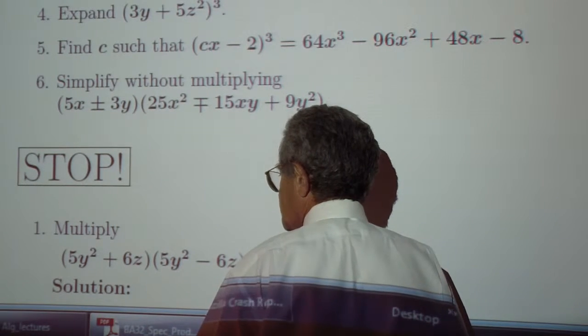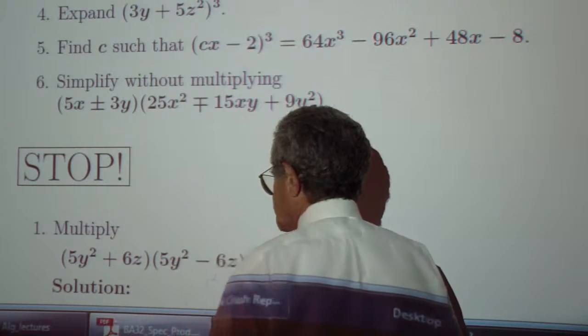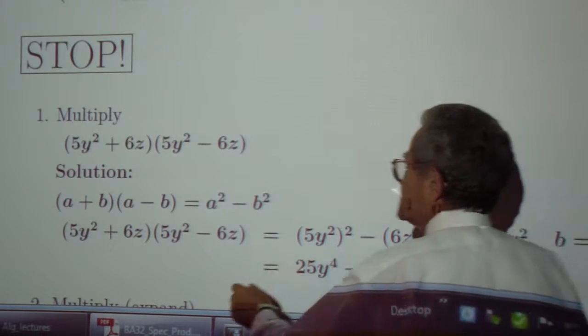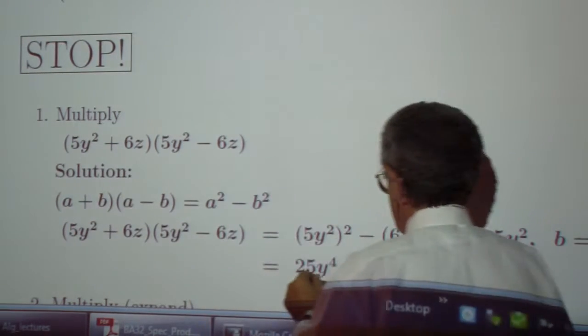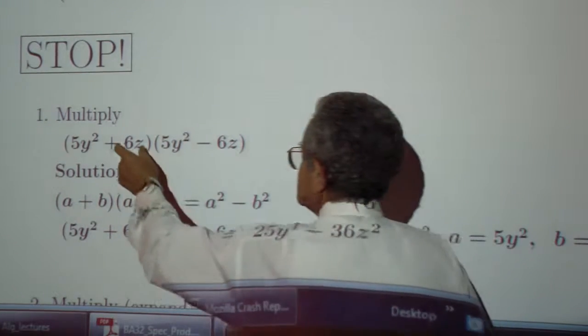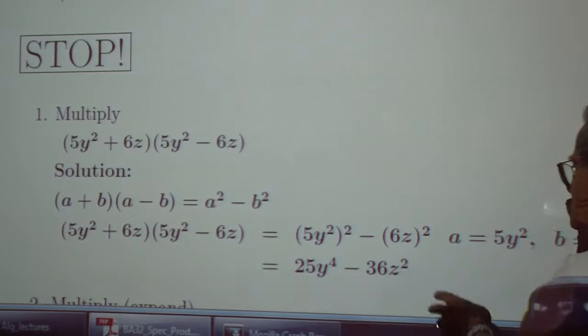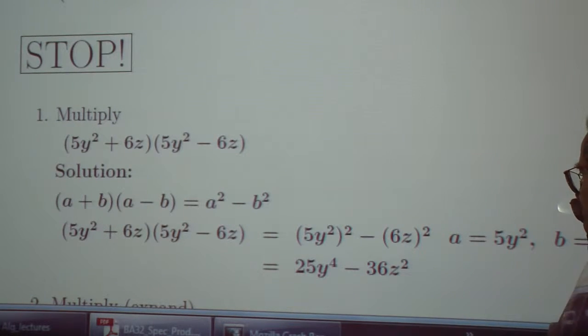Which is a squared, this is your a, minus b, this is your b, or this is your b quantity squared. So 25y to the 4 minus 36z squared.